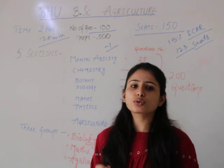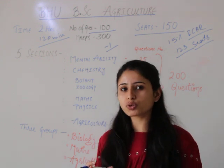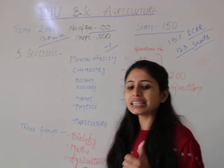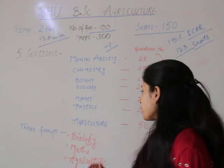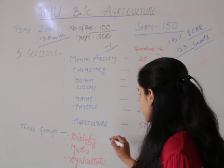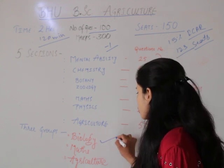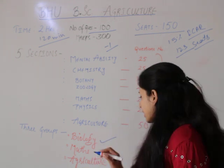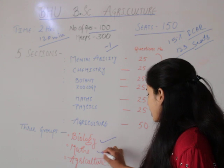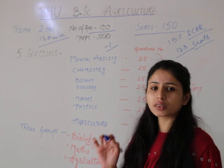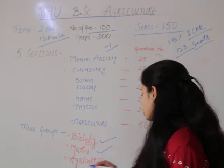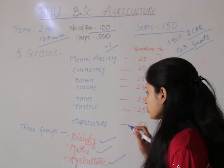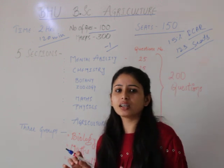You will be able to choose a group. There are 3 groups: the 1st group is Biology, the 2nd group is Maths, and the 3rd group is a combined group. In these 3 groups you can select based on your subject preference.